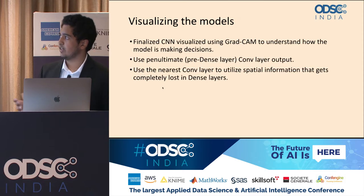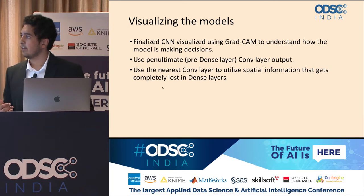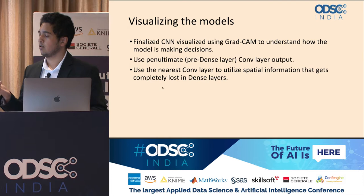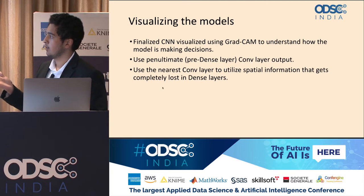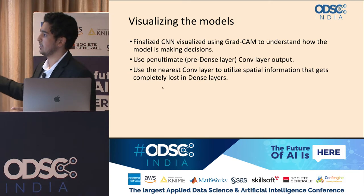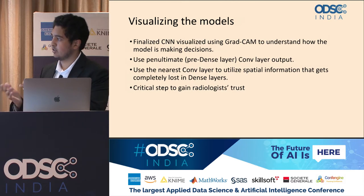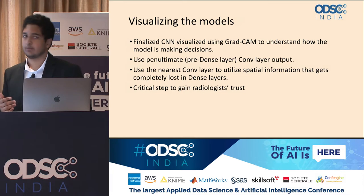The finalized CNN was visualized using GradCAM to understand how the model is making its decisions. GradCAM uses the penultimate convolutional layer right before the fully connected layers, utilizing the spatial information in that conv layer that is completely lost in the later dense layers. This is a critical step to gain radiologists' trust, because it can highlight discriminative regions and make the model really interpretable to domain experts.